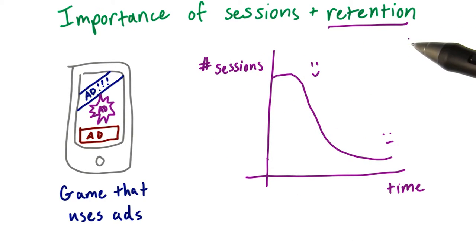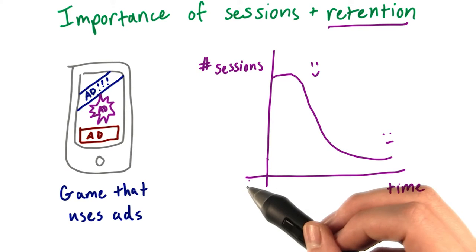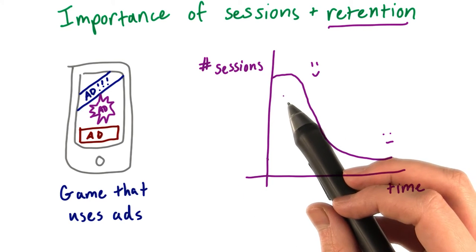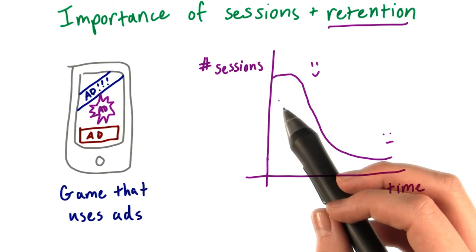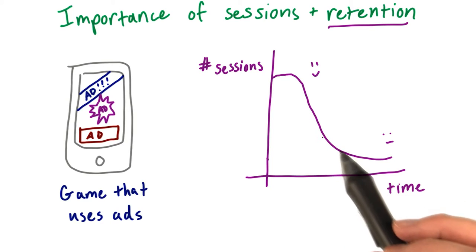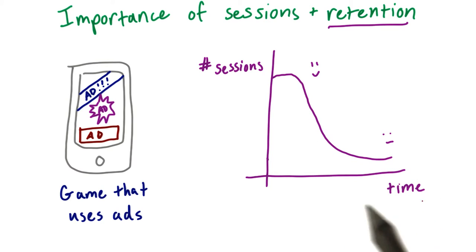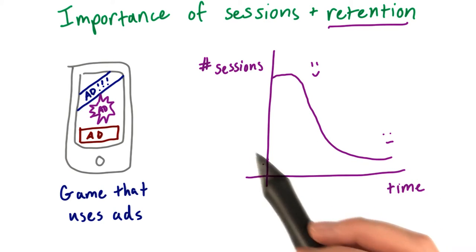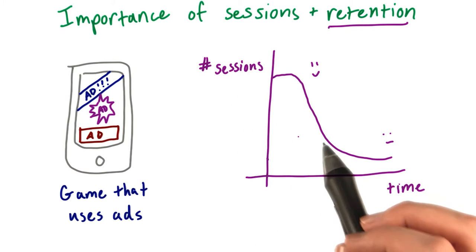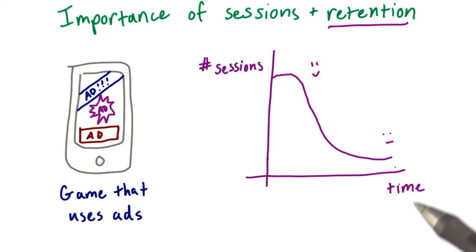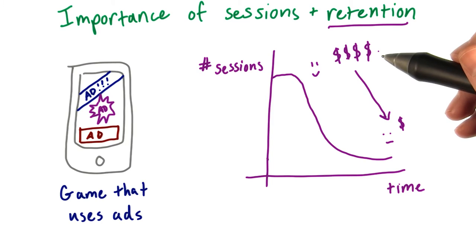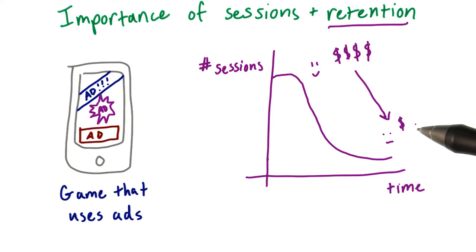And retention looks at these effects over a longer period of time. Say your app launches and people are excited about it — there are a lot of sessions. But then after a week or so, people start to get bored with it and the number of players and sessions drops over time. And when the number of sessions drop, so does the amount of money the game makes. So high retention is important for monetization because your game will only make money over time if you retain a steady number of players.